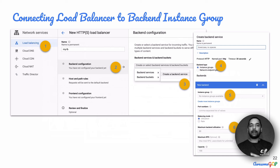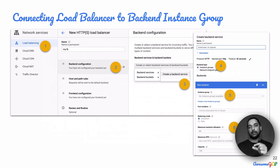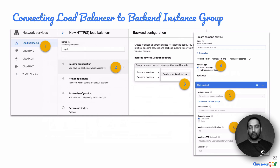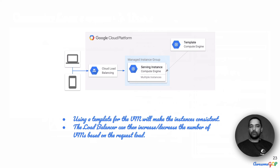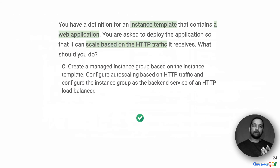To connect a load balancer to a backend instance group: go to Network Services, choose Load Balancing, then choose a backend configuration and select a backend service. One option is to choose an instance group and select the specific managed instance group you have defined. You can further configure a cap on the maximum number of instances to control costs for automatic scaling. Using a template for the VM makes instances consistent and allows easy scaling, and the load balancer increases or decreases VM count based on request load. Therefore, option C is the correct answer.